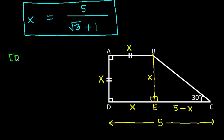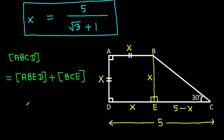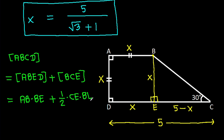Area of ABCD will be equal to area of ABED plus area of BCE. Area of BCD: it will be 1 over 2 times base CE times height BE, and AB is X times BE is X, plus 1 over 2 times CE (which is 5 minus X) times BE (which is X).